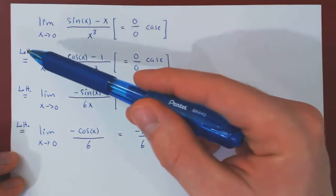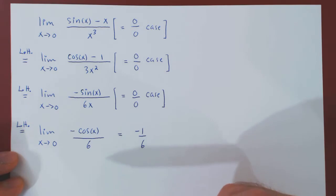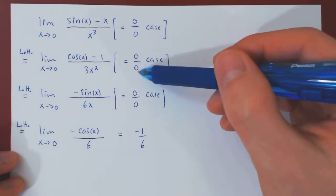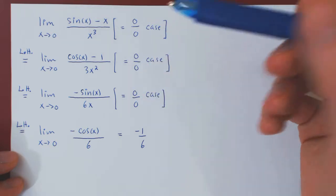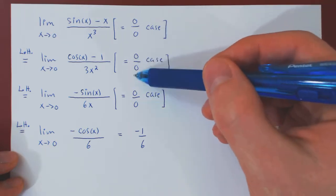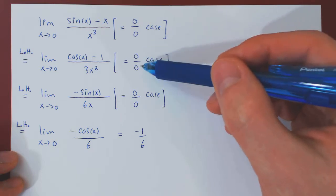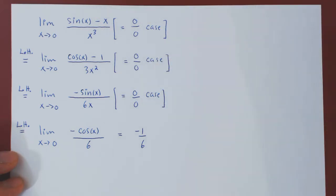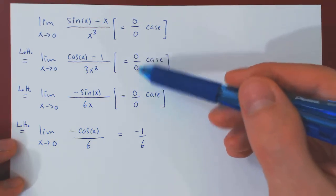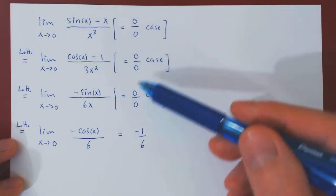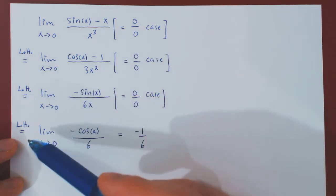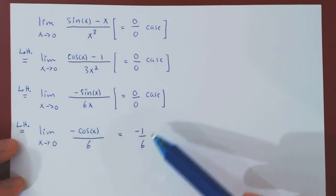And that was after applying L'Hôpital's rule three times. The point is, as long as you have a 0 over 0 case, the limit is indeterminate. You have the ratio of two functions that are shrinking to 0, so we still don't know what happens. But as long as you have a 0 over 0 case, you can apply L'Hôpital's rule as many times as needed until, hopefully, the limit becomes trivial. And that's it.